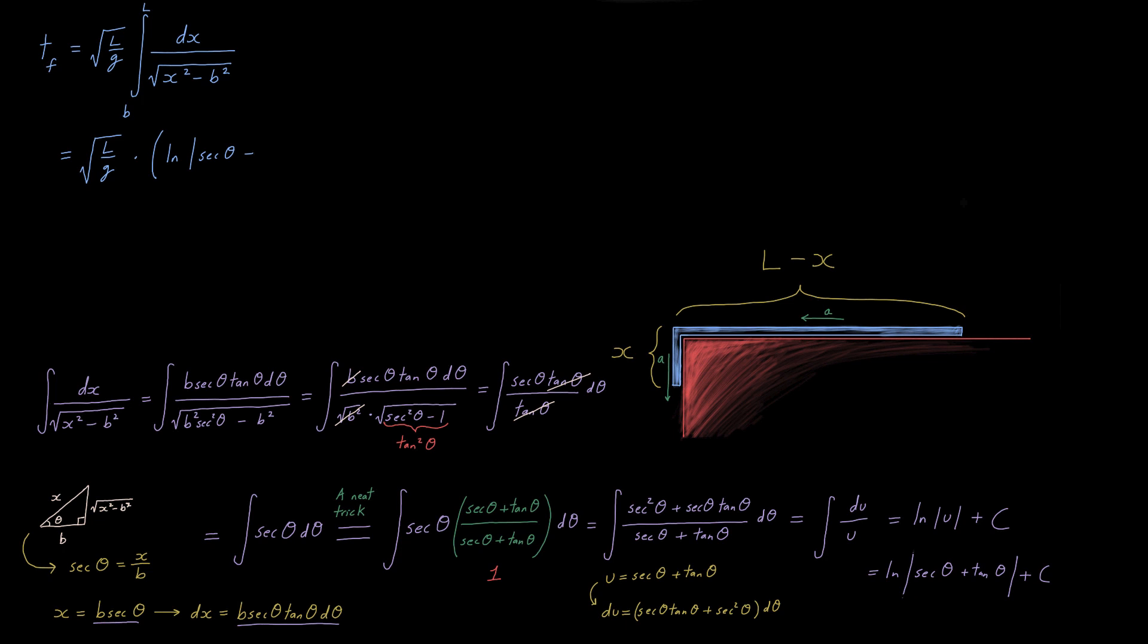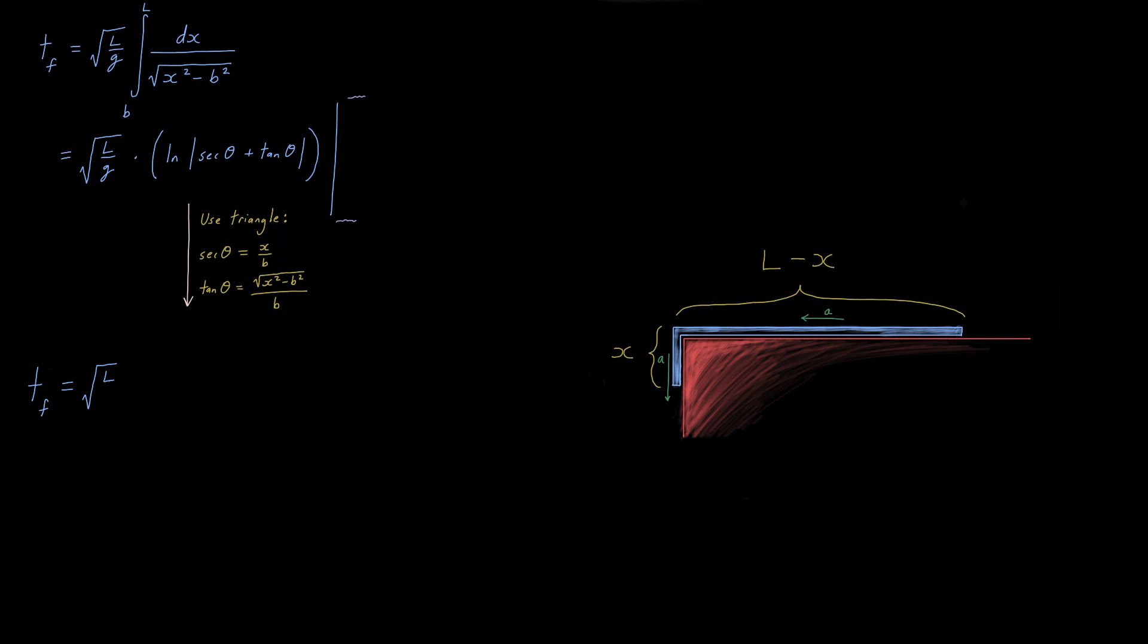Now if we really wanted to, we could rewrite this expression with theta values for our bounds of integration, but how about instead we fall back into the familiar comfortable territory of x values as bounds of integration. To do that, write the theta expression in terms of x using the right triangle. Secant is x over b, tangent of theta is the square root of x squared minus b squared over b.